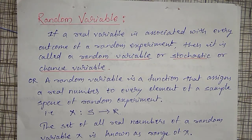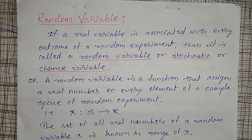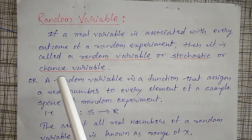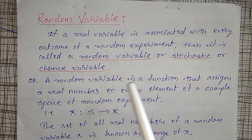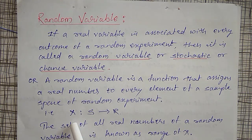In the last video I explained the random variable. Once again, a real variable associated with every outcome of a random experiment is called a random variable. Mathematically, a random variable is a function from a sample space to a real number R.